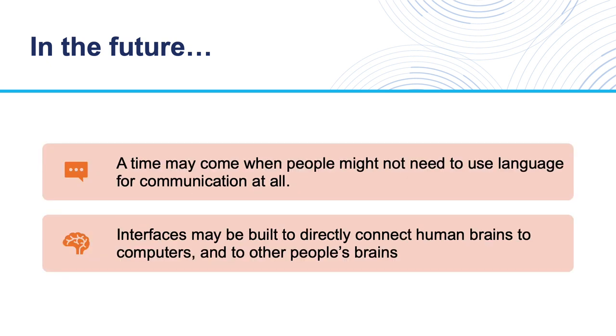In an even more distant future, I believe that a time may come when people might not need to use language for communication at all. Instead, interfaces may be built to directly connect human brains to computers and to other people's brains. Through these neural interfaces, information will be transmitted much faster and much more reliably than through language use. I cannot predict when or if this will actually be possible, but very exciting research is being done in this direction, and we might be surprised by the speed at which these neural interfaces become available.